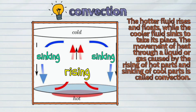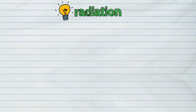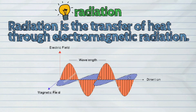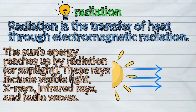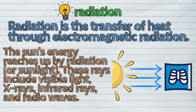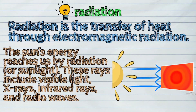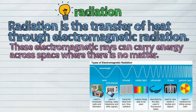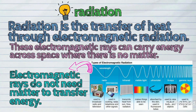The last way of heat transfer is called radiation. Radiation is the transfer of heat through electromagnetic radiation. The sun's energy reaches us by radiation, or sunlight. These rays include visible light, x-rays, infrared rays, and radio waves. These electromagnetic rays can carry energy across space where there is no matter. Thus, electromagnetic rays do not need matter to transfer energy.